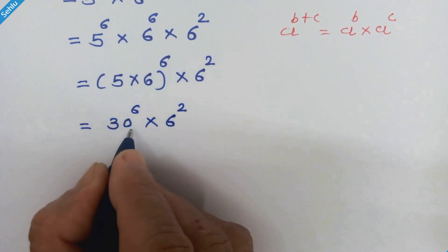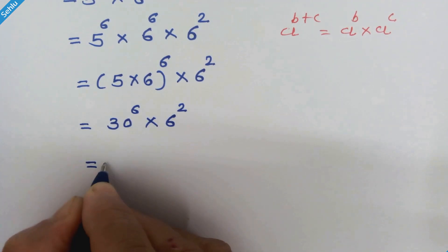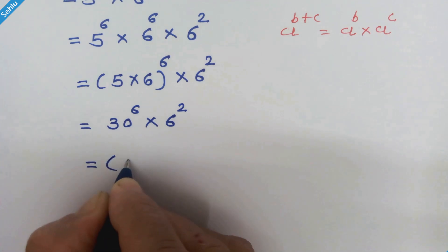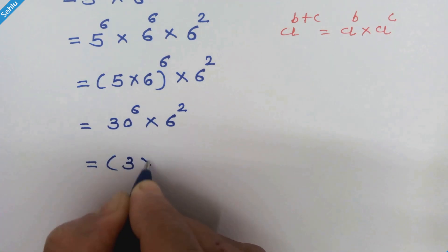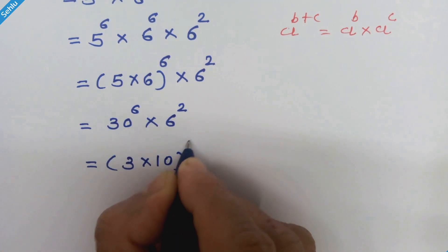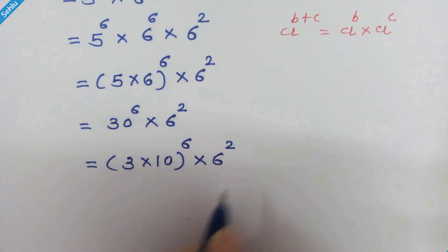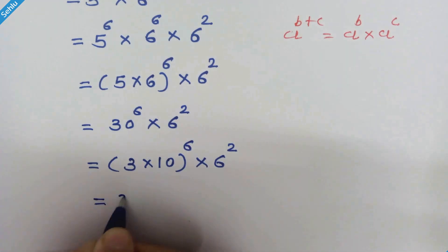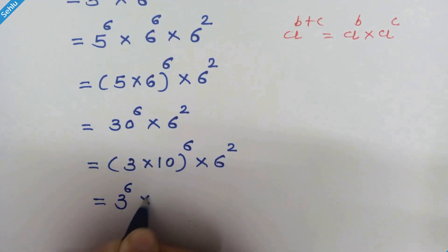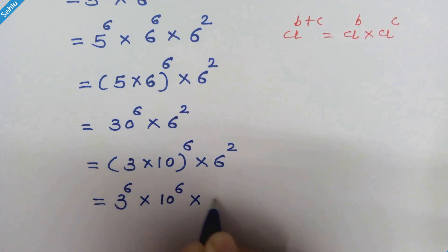Now 30 can be written as 3 times 10. So we can write it like 3 times 10 whole raise to 6 times 6 square, giving us 3 raise to 6 times 10 raise to 6 times 6 square.